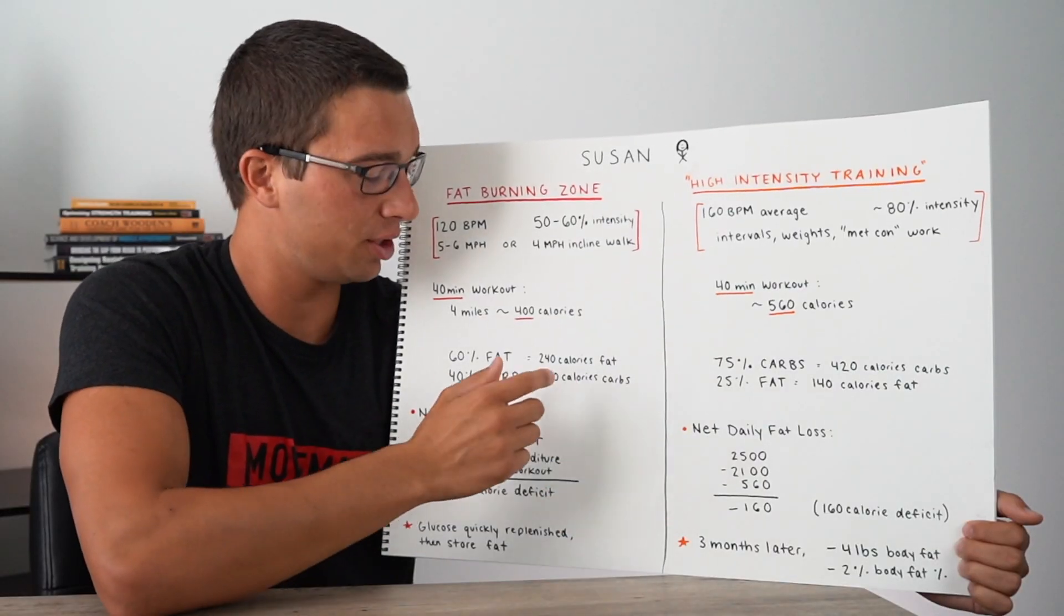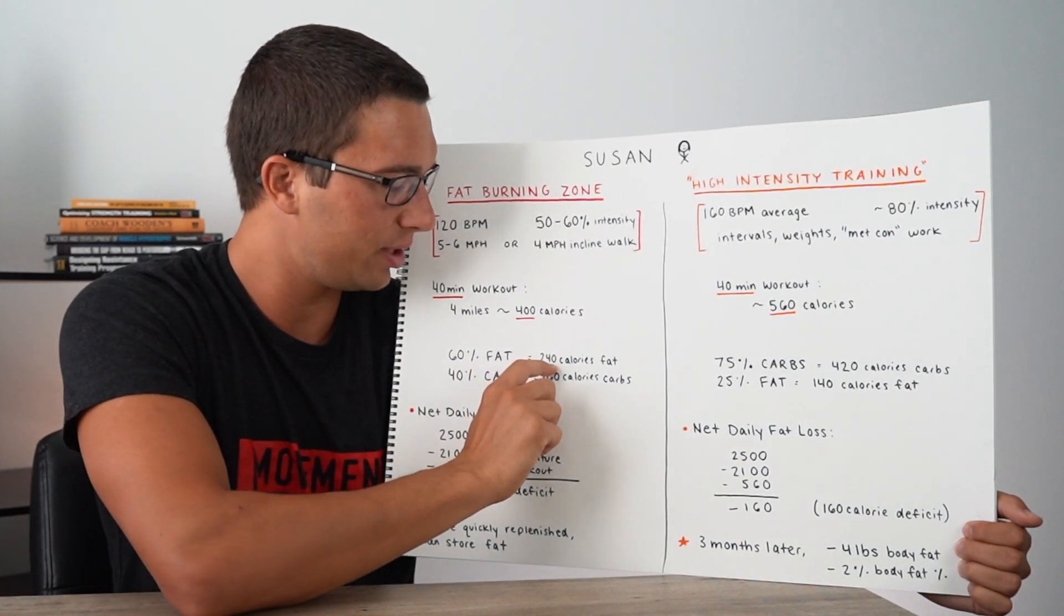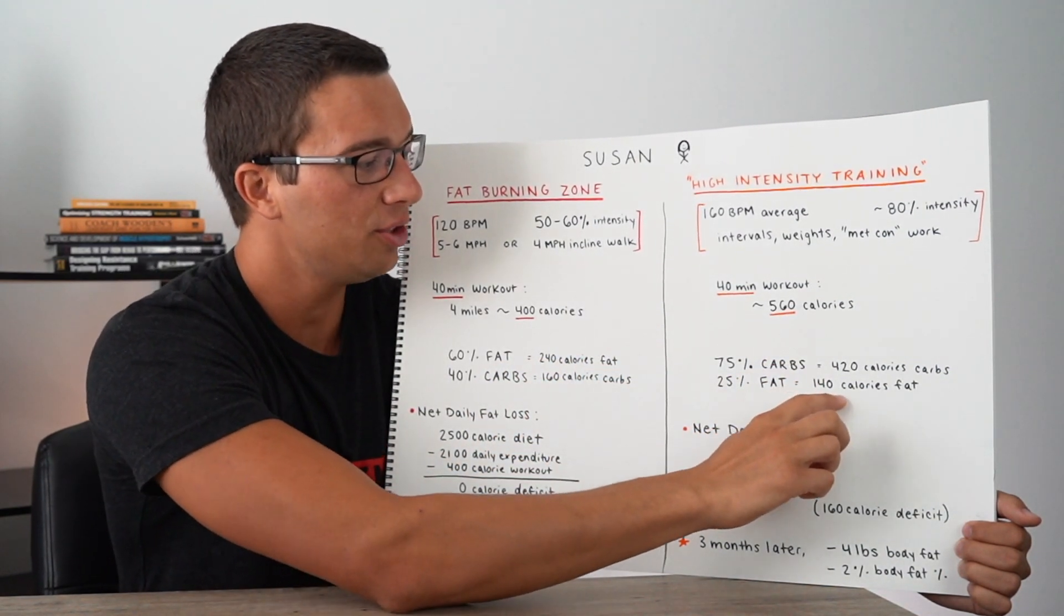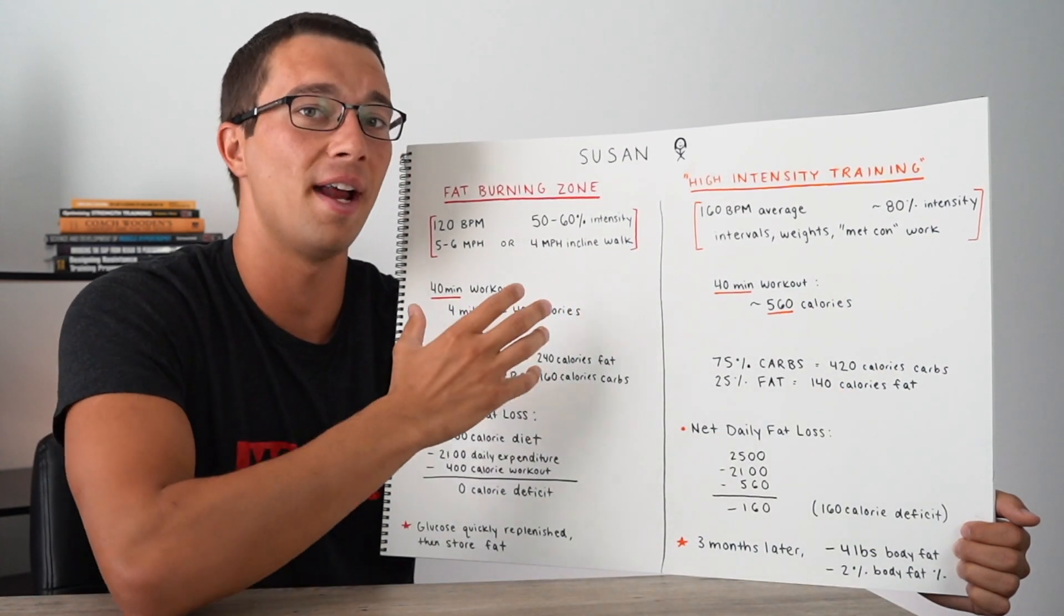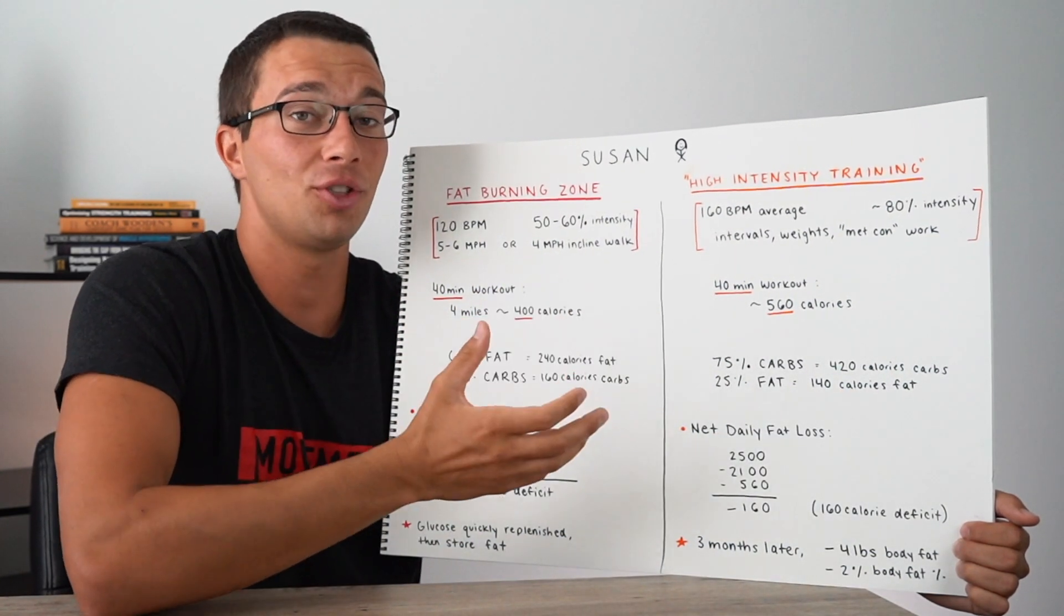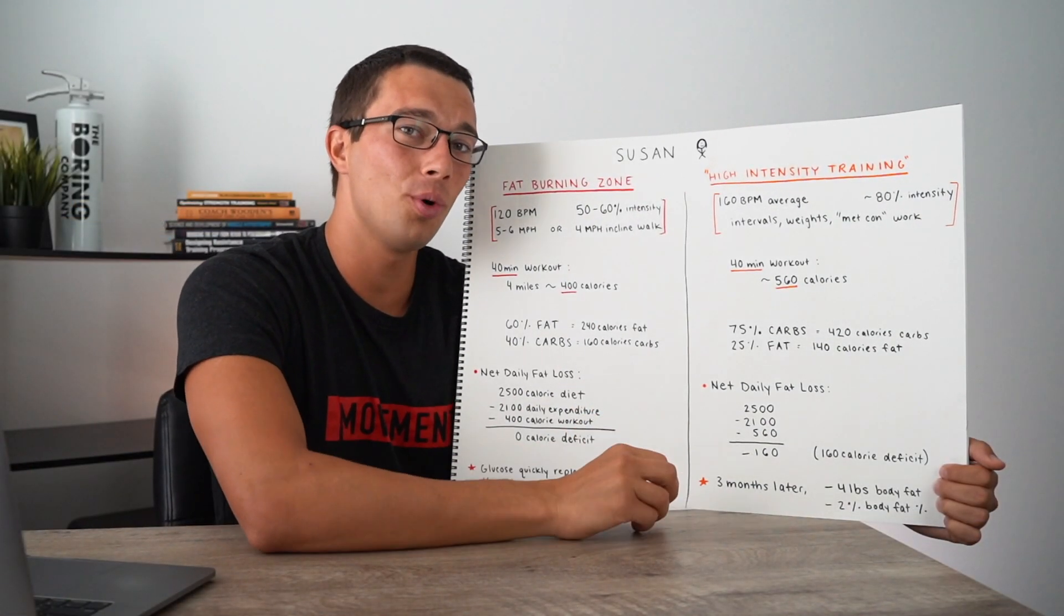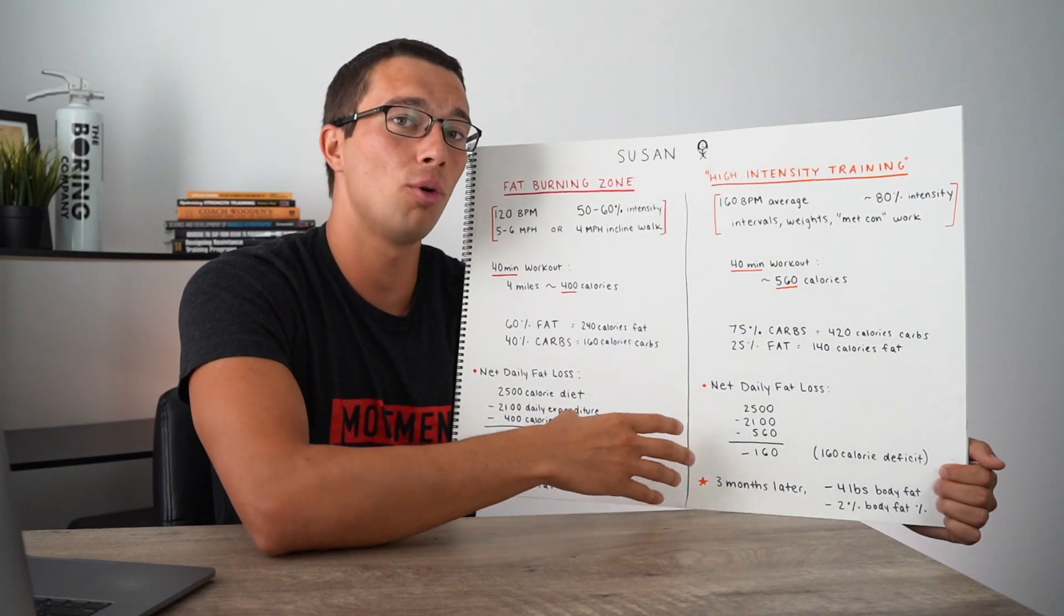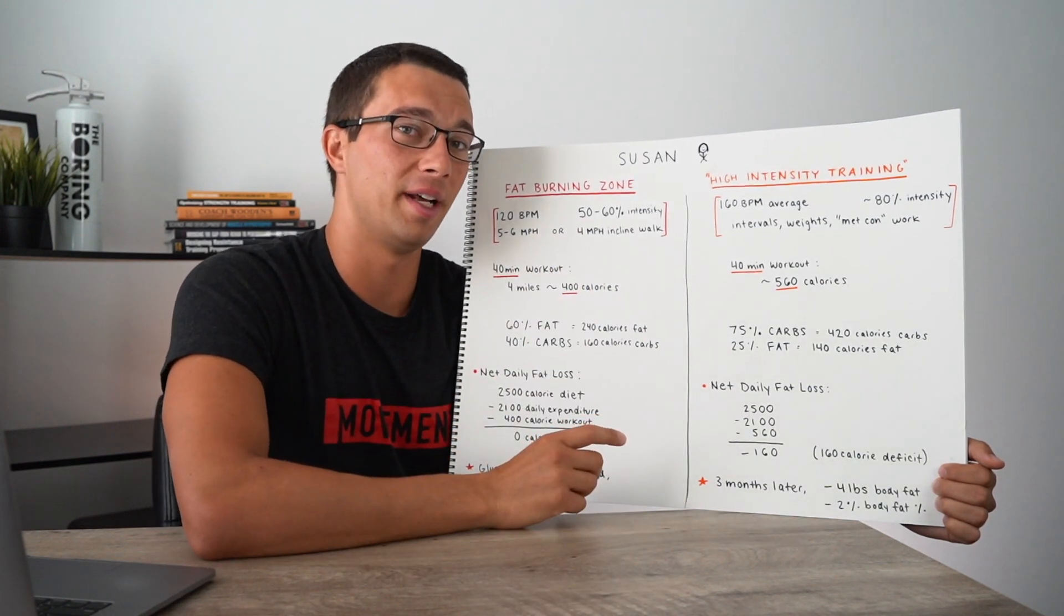All right, so at this point, it actually looks pretty good for the fat burning zone, because we actually burned more calories from fat in the fat burning zone, 240 calories from fat, than we did over here, only 140 calories from fat. So in theory, at the end of this workout, we actually burn more fat in the fat burning zone, and that's true. But what really matters at the end of the day is our total net muscle protein synthesis and our total net body fat loss over the course of 24 hours or a week or a month. And that's what we're gonna get into next.